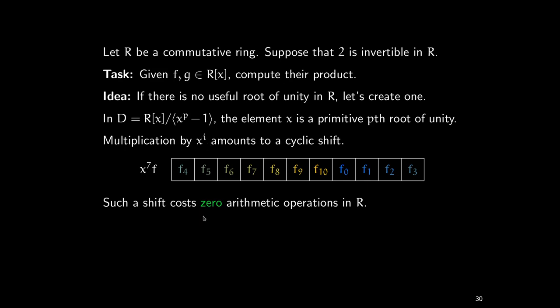Multiplications by x^i cost zero operations in r. Additions in D are a bit more expensive: every element of D is represented by a polynomial of degree less than p, which can have p coefficients. Adding two such polynomials means doing p additions in r.